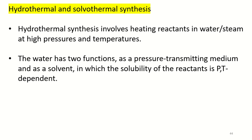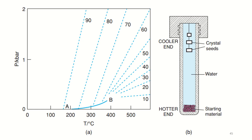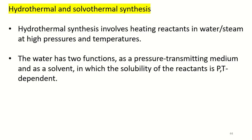This method is quite simple. Reactants along with water are placed inside a Teflon-lined cylinder, or what we call a bomb, which is either sealed or connected to an external pressure control. The bomb is placed in an oven, usually at a temperature range of 100°C to 500°C.